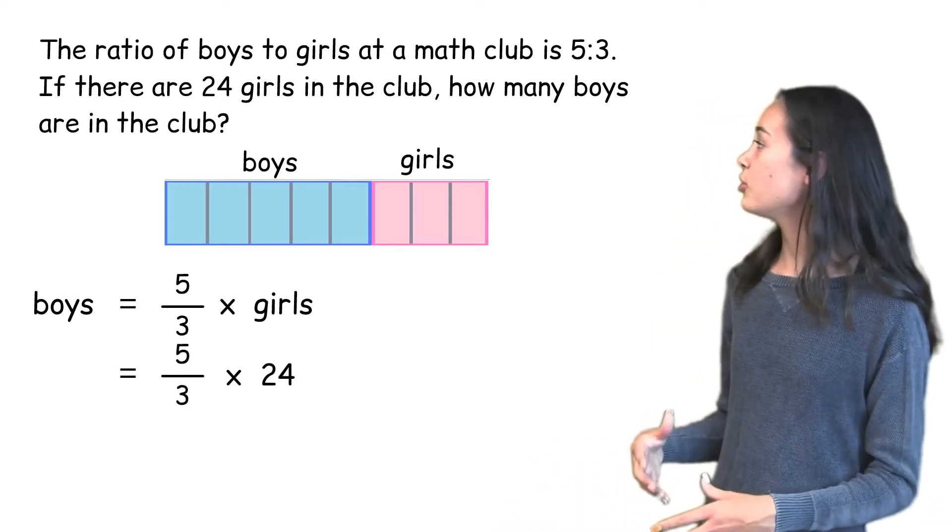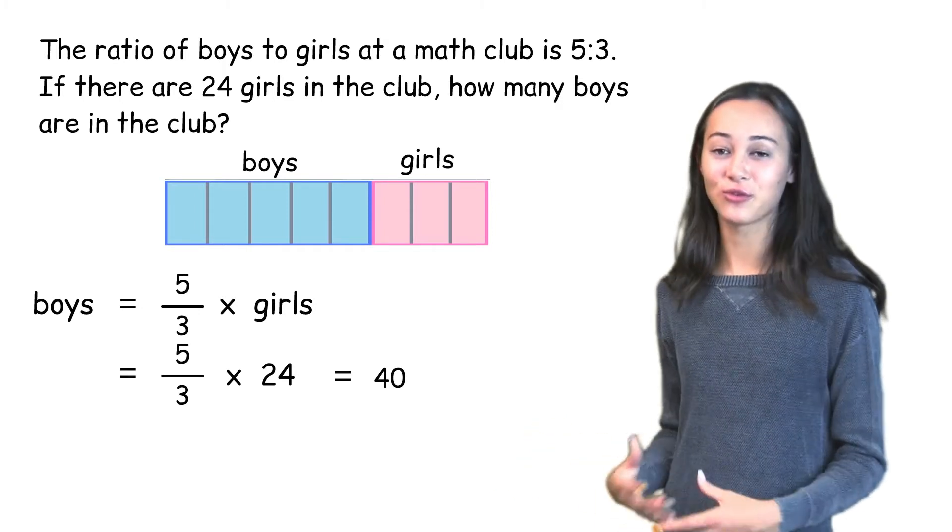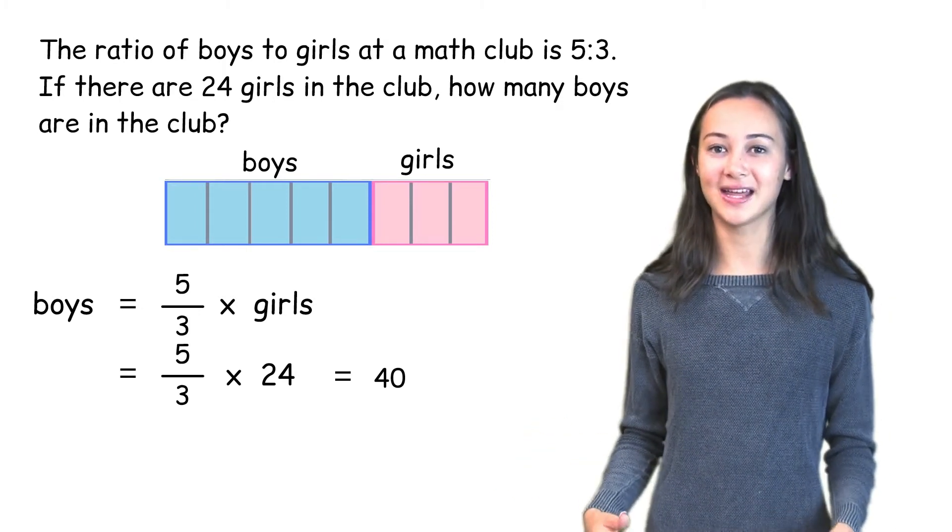Since there are 24 girls, that means the number of boys will be 5 thirds times 24, which is 40. So there are 40 boys in the math club.